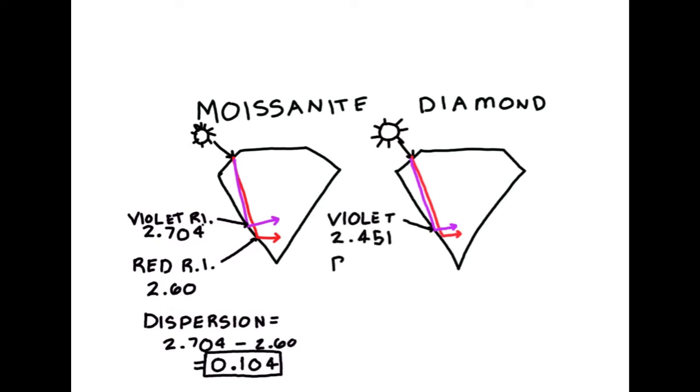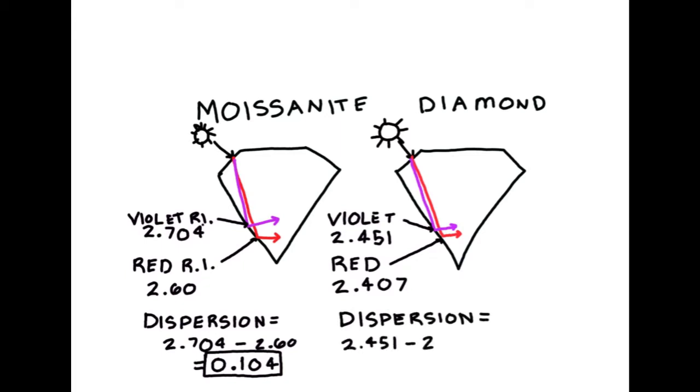Moissanite will refract violet light and red light at greater differences to each other than diamond. Therefore, moissanite has a higher dispersion rate than diamond. To recap: refractive index is a measurement of how far light bends. A shallow refractive index would be almost flat — for example, air has a refractive index of 1, water is about 1.3, glass is about 1.5. Diamond and moissanite have different refractive indexes, and that index is a measurement of how steep that angle is for light.